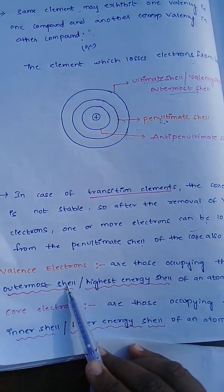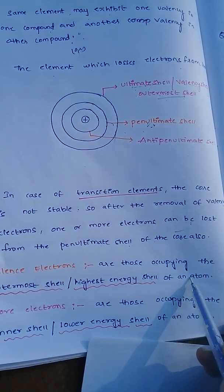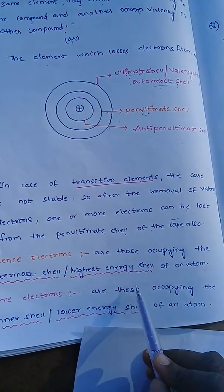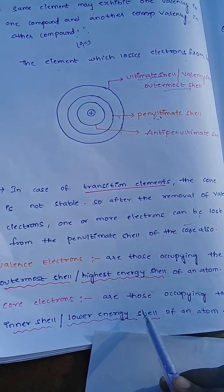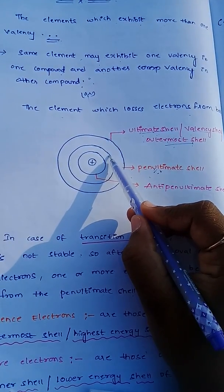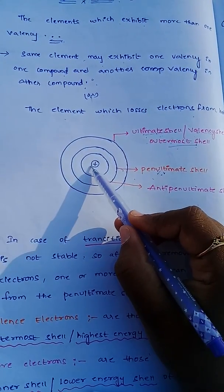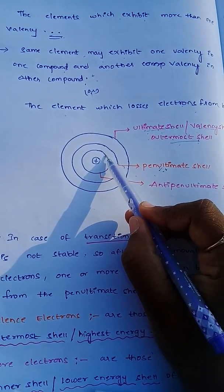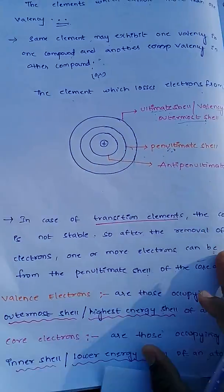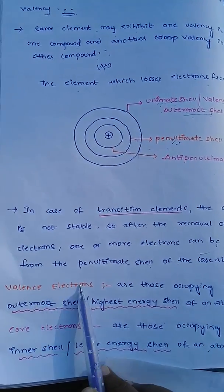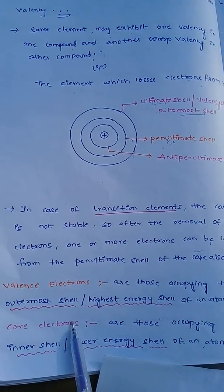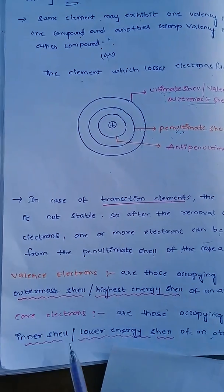Valency electrons are those occupying the outermost shell or highest energy shell of an atom. Core electrons are those occupying the inner shell or lower energy shell of an atom. The shell near to the nucleus has lower energy, and the shell far from the nucleus has higher energy.